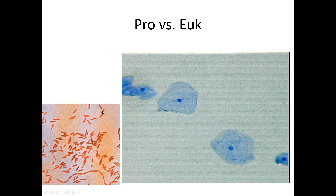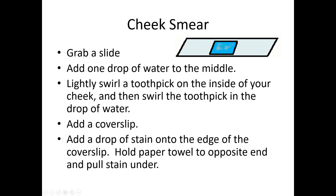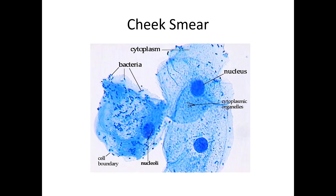Prokaryotic cells did evolve first based on the fossil record. You can see some of your own cells — you are eukaryotic. This is what your cells look like when you stain them with methylene blue; you can see the nuclei present inside the cells. This picture really shows the size difference between prokaryotic cells — labeled as bacteria — and the eukaryotic cell. This is one big eukaryotic cell, and it also happens to be an animal cell, because whether you want to believe it or not, you are an animal.